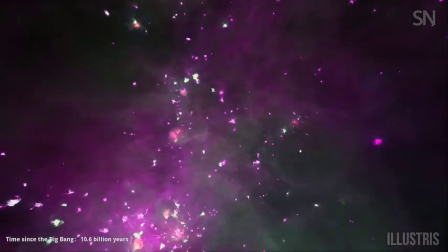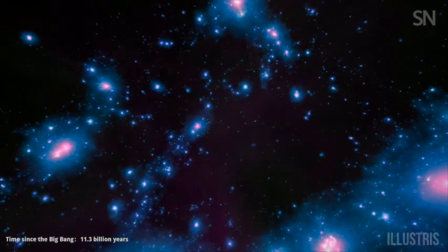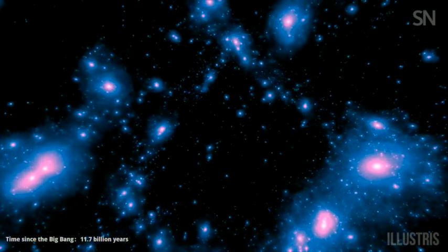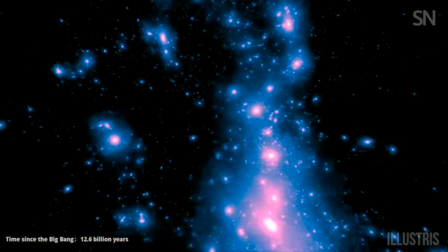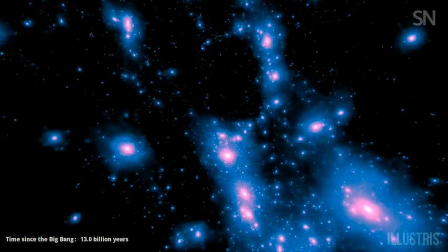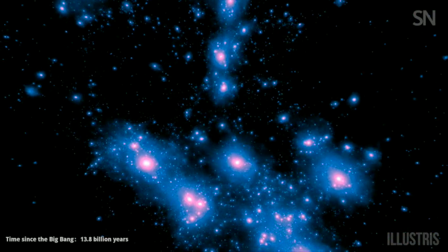Approaching the universe as it is today, the simulation switches back to dark matter. It shows how the tightly packed nuggets of dark matter in the early universe have expanded over billions of years to become the massive galaxy clusters and superclusters, such as the Virgo supercluster, we see today.